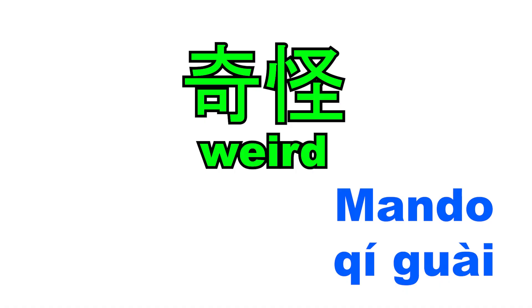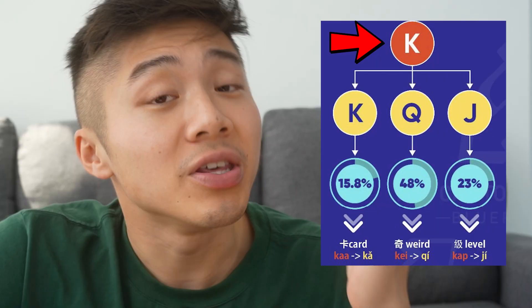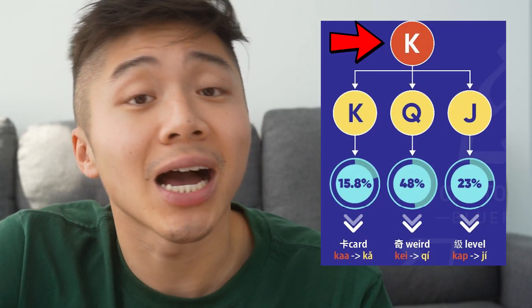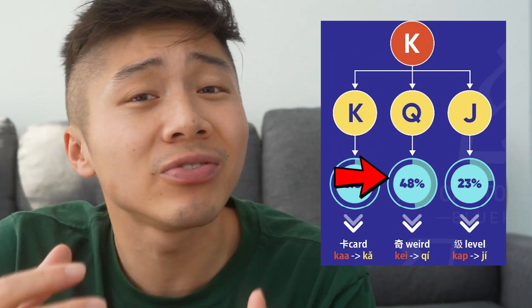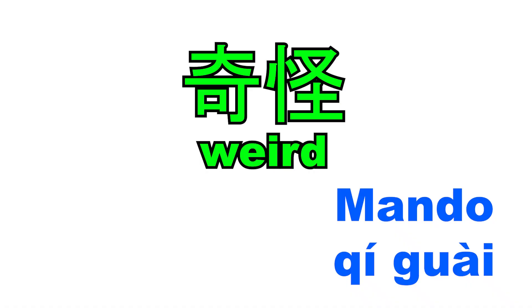For example, you hear the Mandarin word 'qi guai', and it sounds like something you know in Cantonese — 'kei guai' — but you're not really sure. Well, you know that 'kei' in Cantonese actually becomes a Q in Mandarin about 50% of the time, so odds are 'qi guai' probably means 'kei guai'. That's a really good benefit — going in reverse and helping you learn Mandarin faster, because now you can recognize that 'kei guai' in Mandarin is 'qi guai', and you were also able to understand what that person was saying.